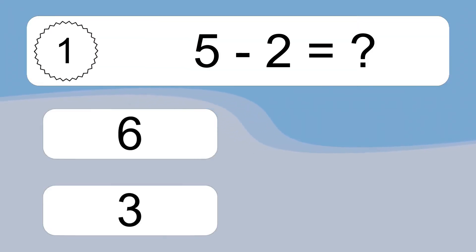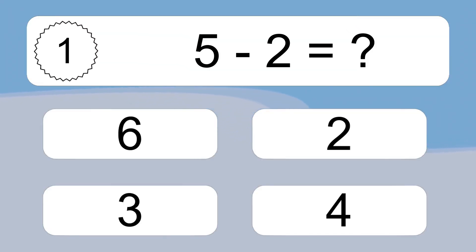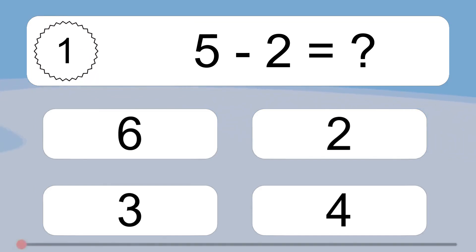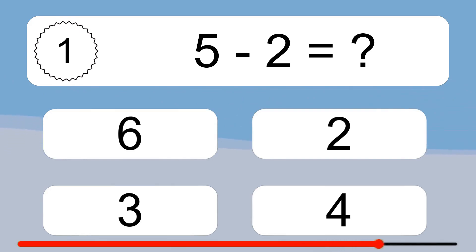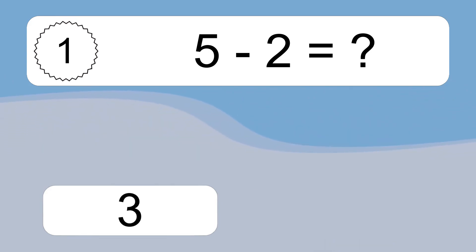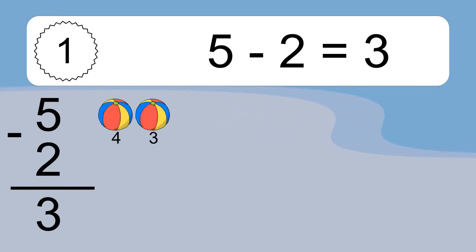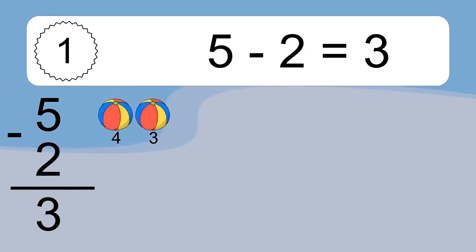5 minus 2 equals what? 5 minus 2 equals 3. Let's count it: 4, 3.